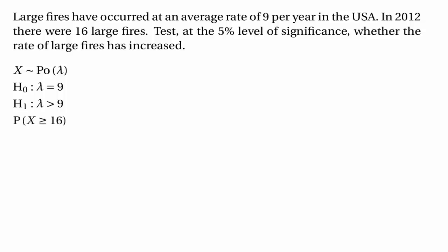The probability we need to work out is the chance of getting 16 large fires or more, because the alternative hypothesis says lambda is greater than 9, so numbers like 16 are those greater than or equal to 16. We need to find the probability of getting 16 or more large fires on the assumption that lambda equals 9. Using tables, we convert this to one minus the probability that x is less than or equal to 15.